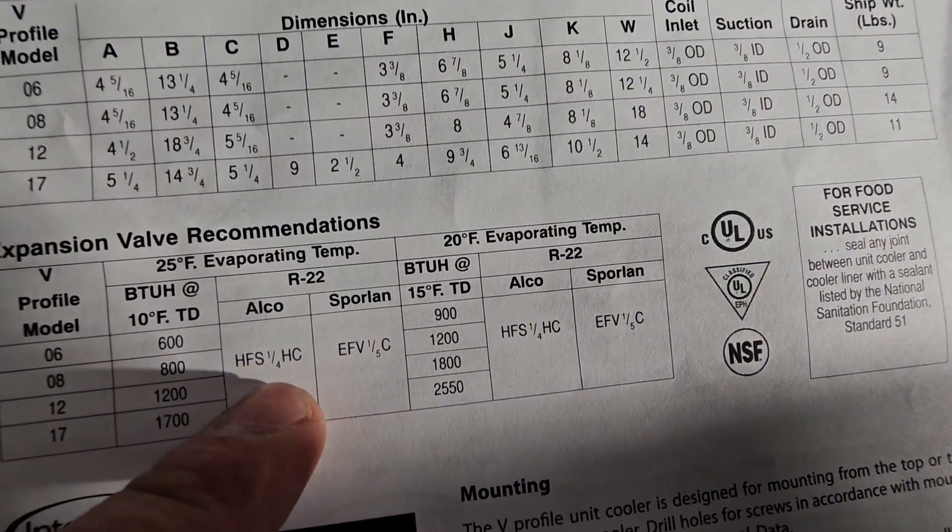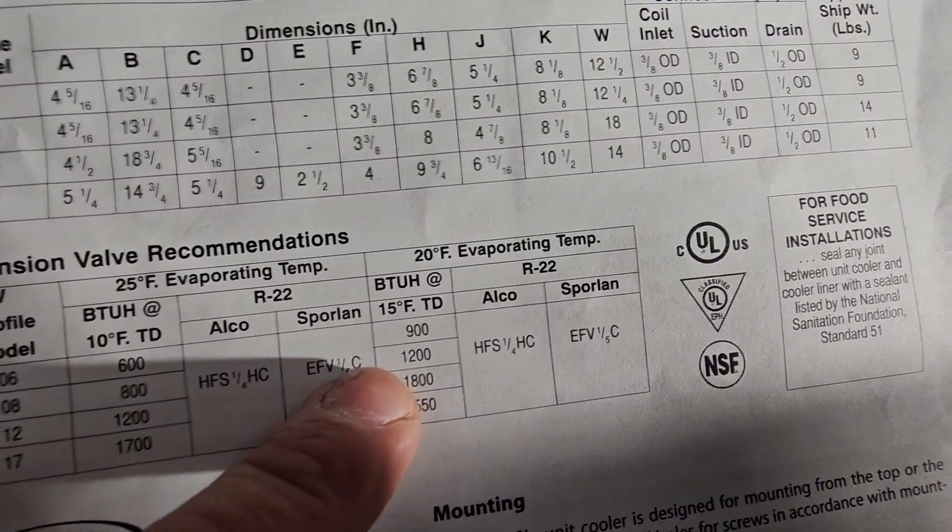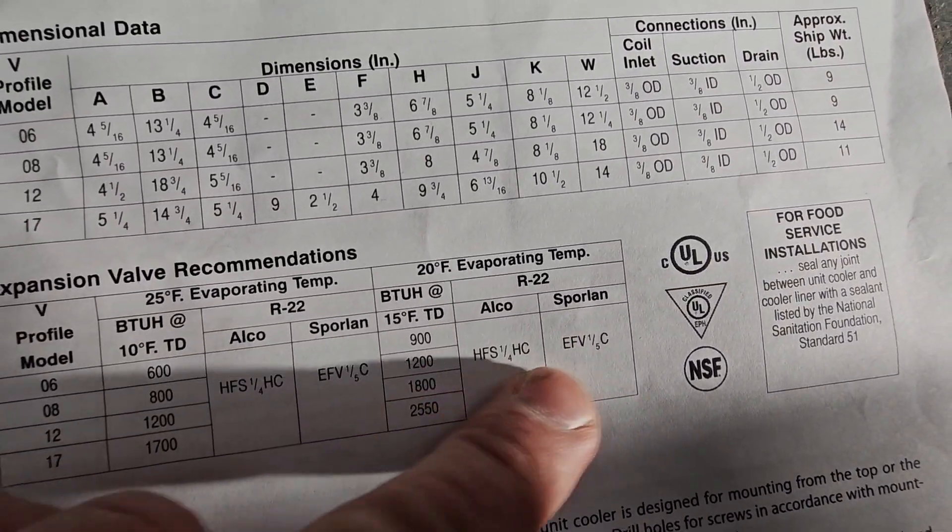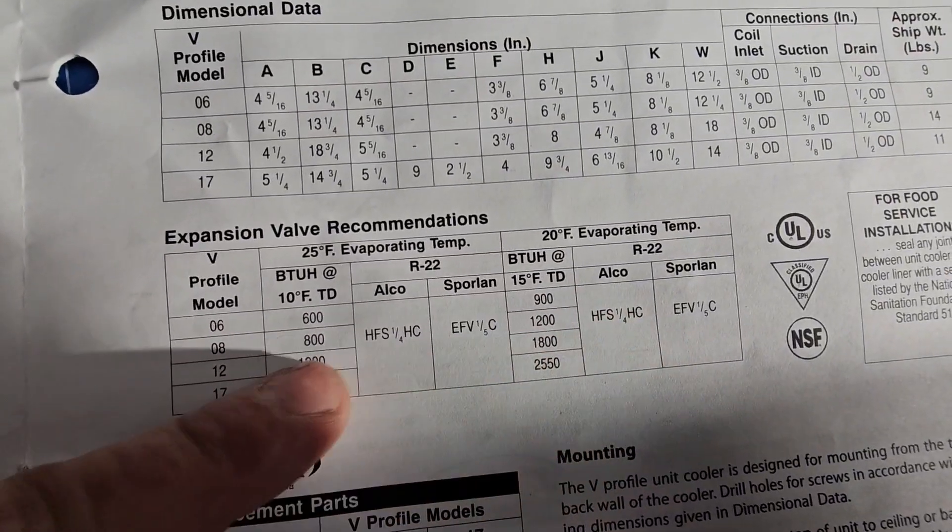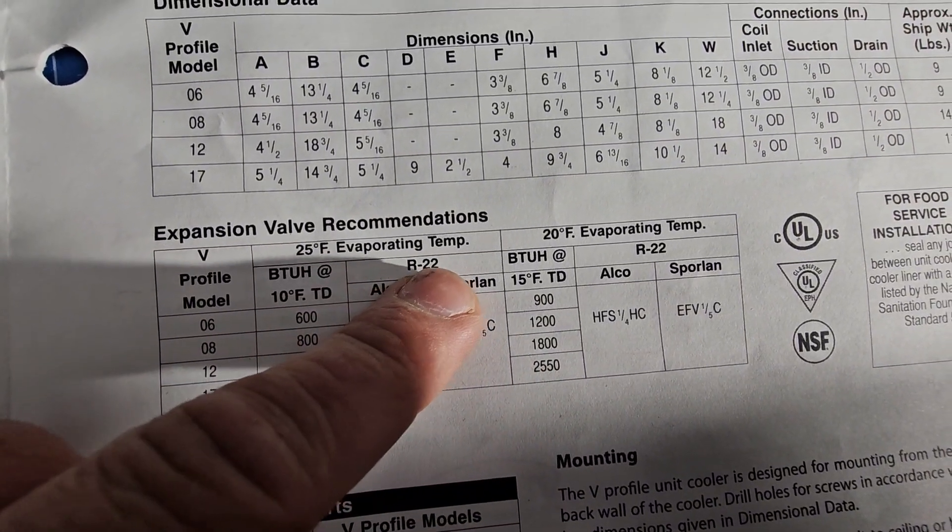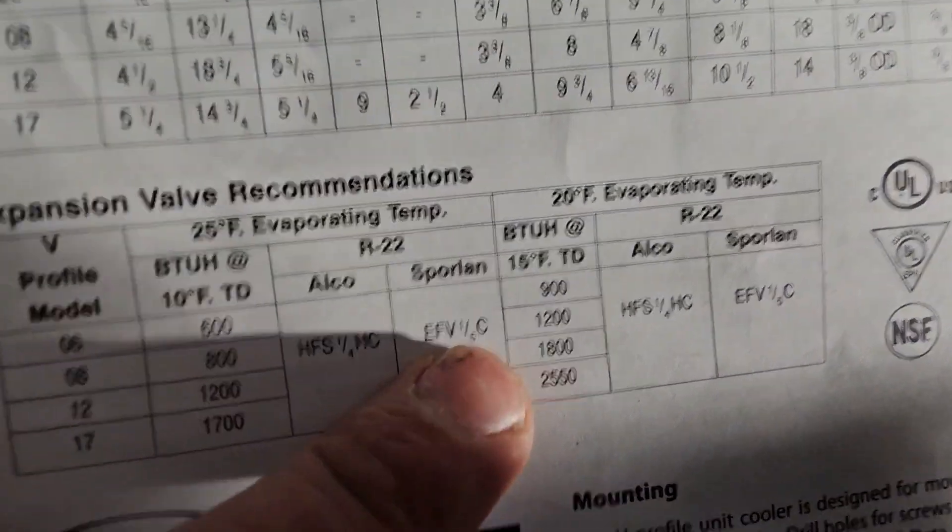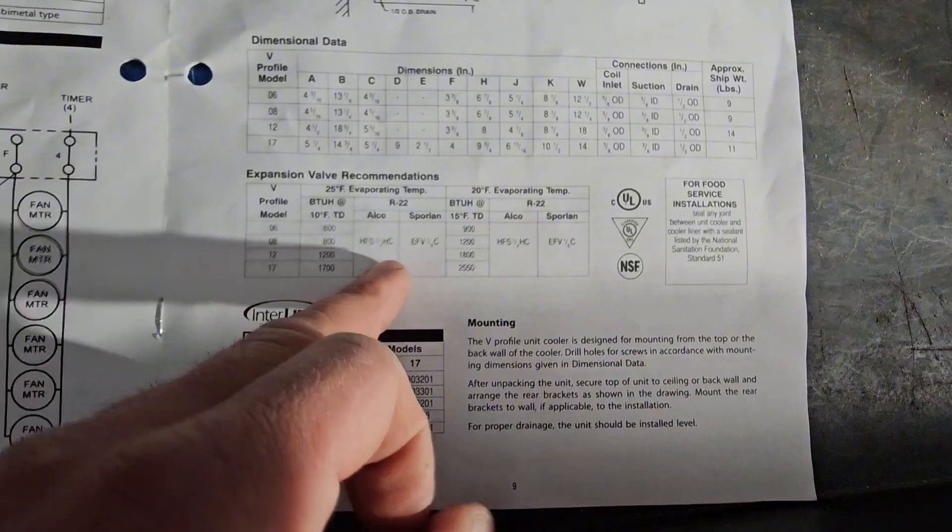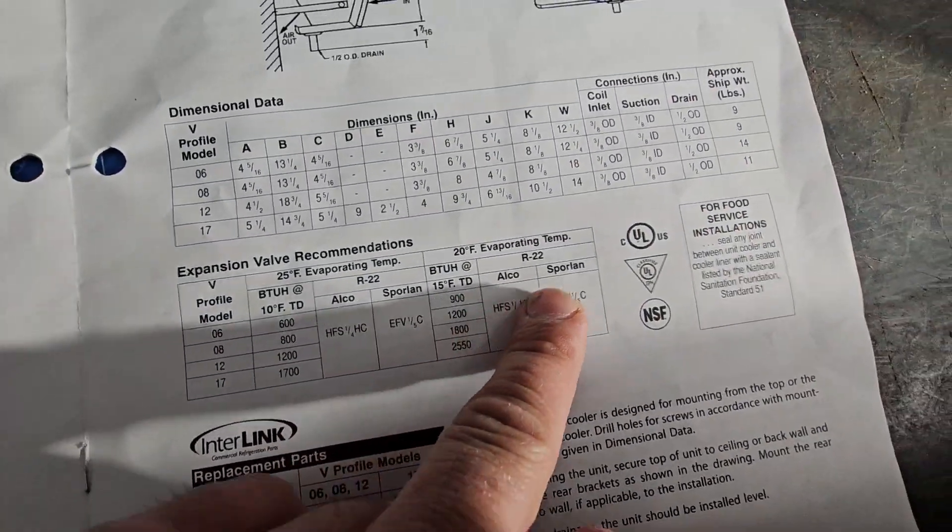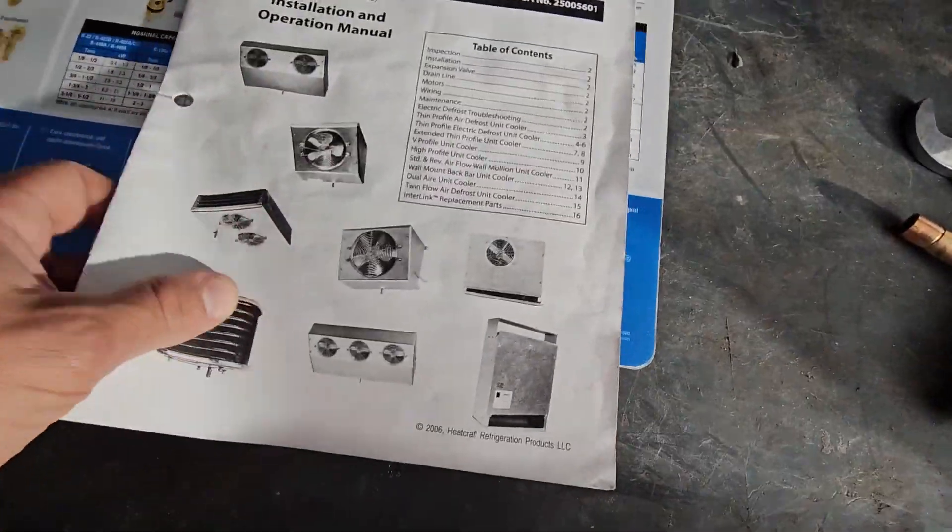And regardless, this is rated for R22. You need a quarter ton or a fifth ton valve for either, for both TDs. It doesn't matter what refrigerant you're using, you need a quarter ton valve or a one-fifth ton, which is just pretty much the same thing.